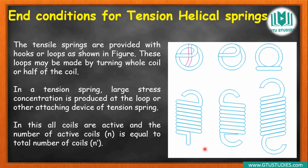Therefore, the upper and lower end coils also remain active coils — stress is produced there too. So total number of coils and total number of active coils are the same for tension springs. There are no inactive coils — end conditions have no inactive coils here, so total equals active coils.